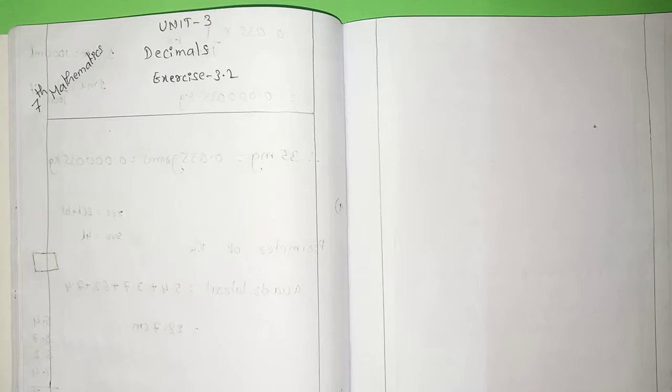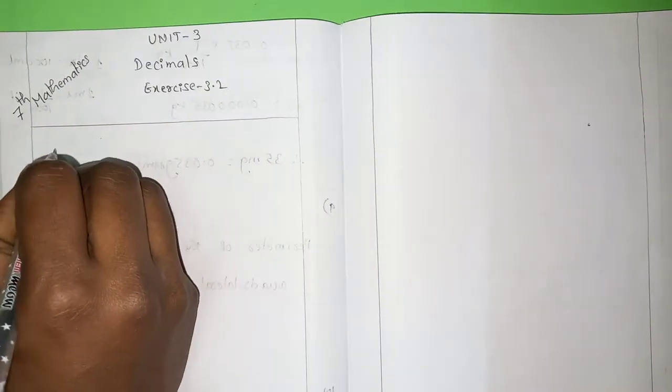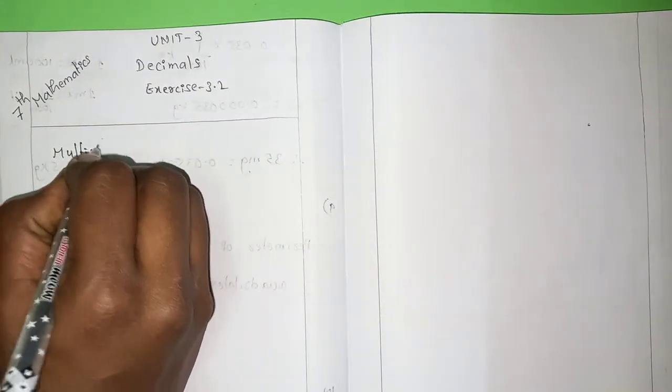Hi students, now you are watching 7th class mathematics 3rd unit Exercise 3.2. The Exercise 3.2 mainly deals with the multiplication of decimal numbers.